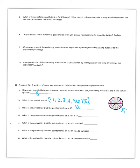What's the probability the pointer lands on a 3 or a 7? For 3 or a 7, that will be 2 eighths, which is equal to 1 fourth.